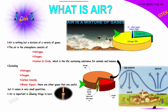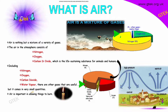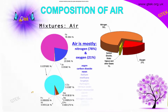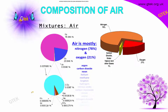Air is really important for making things burn. As mentioned, the predominant gas is nitrogen, and you also have oxygen and carbon dioxide.